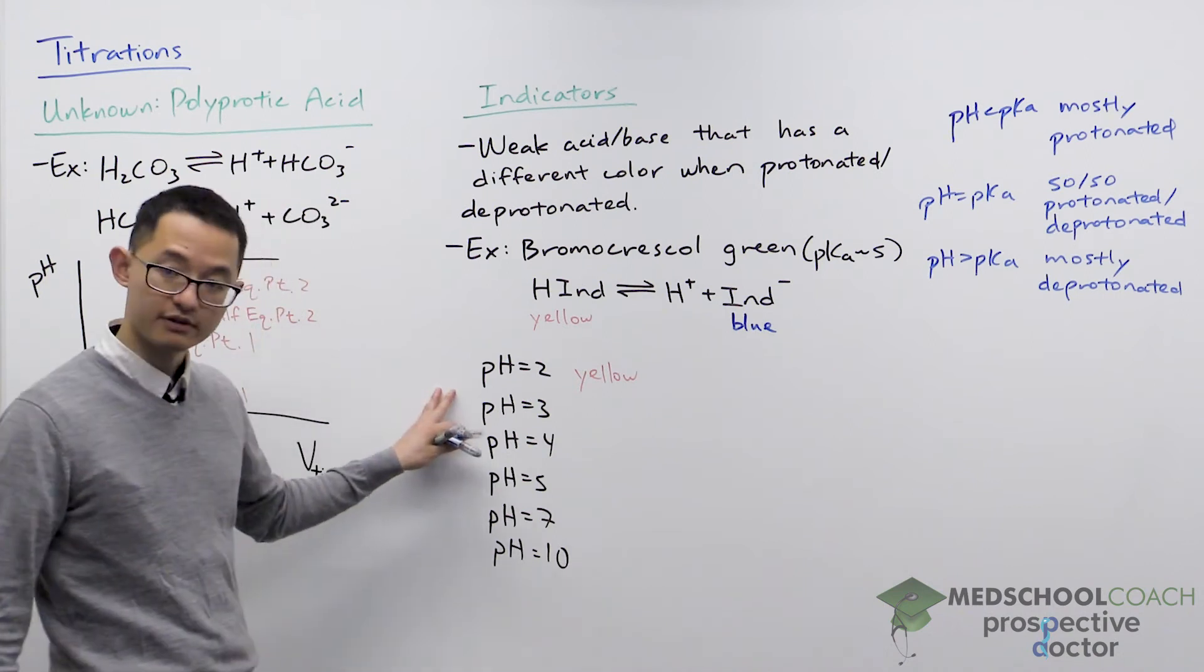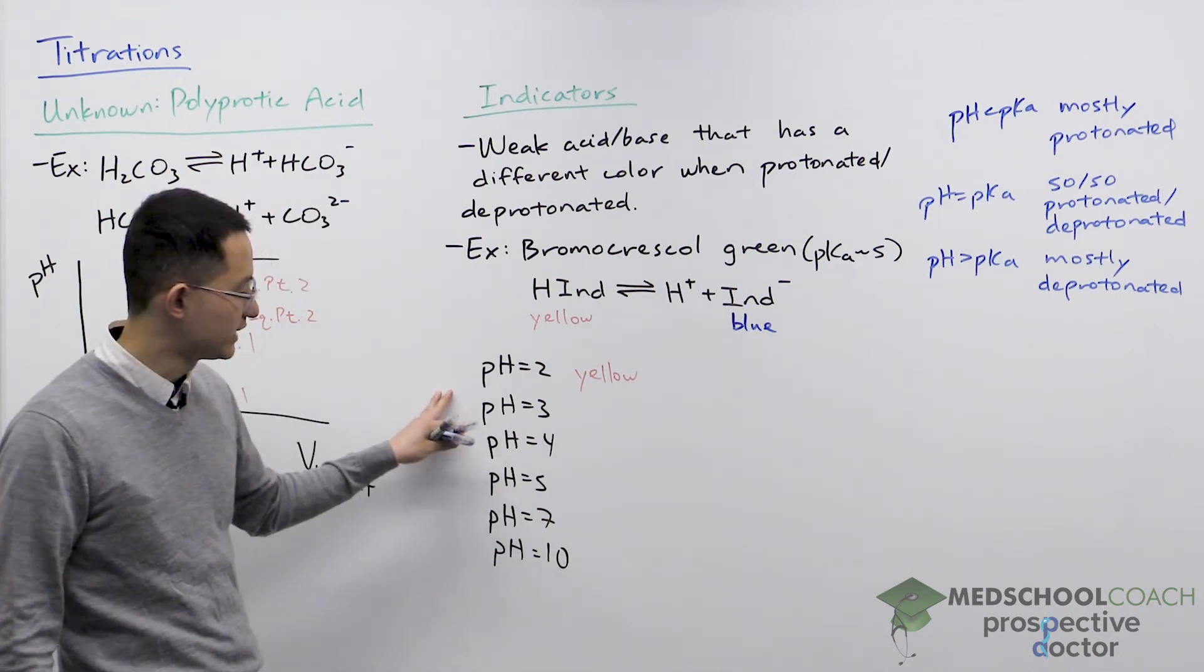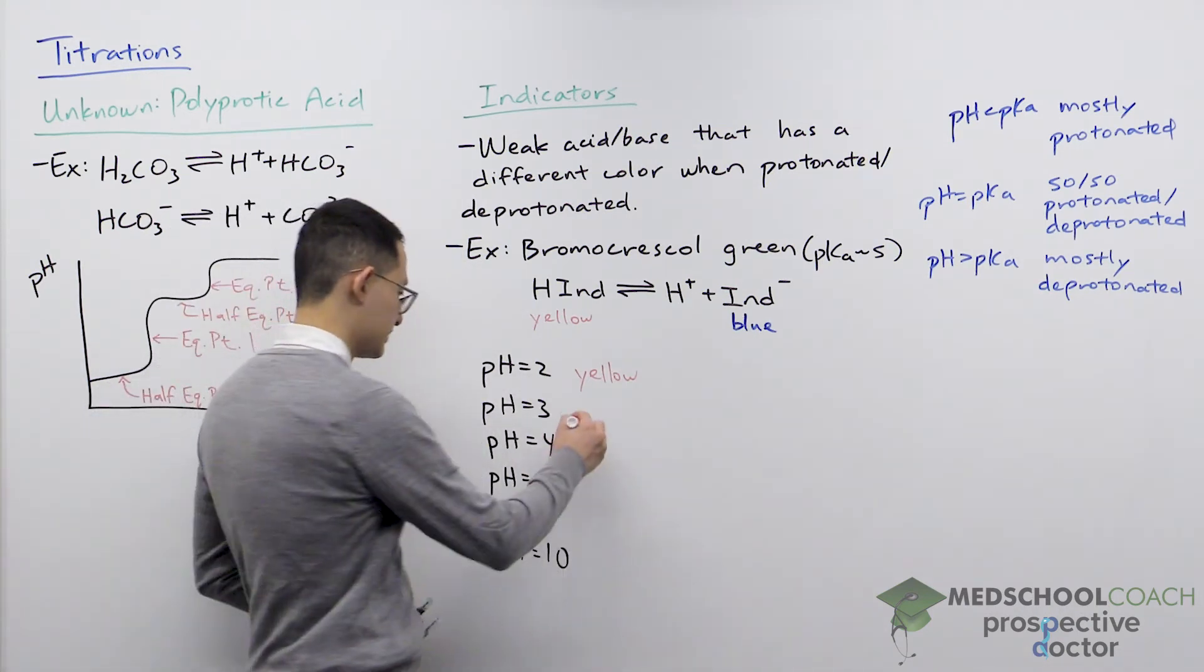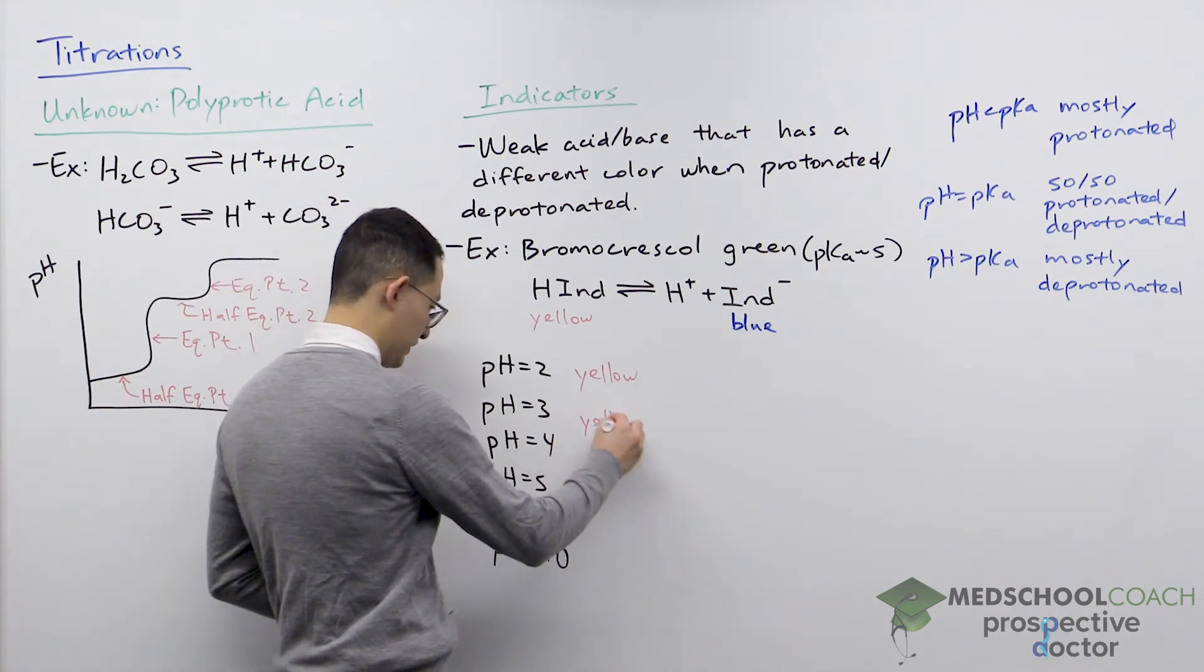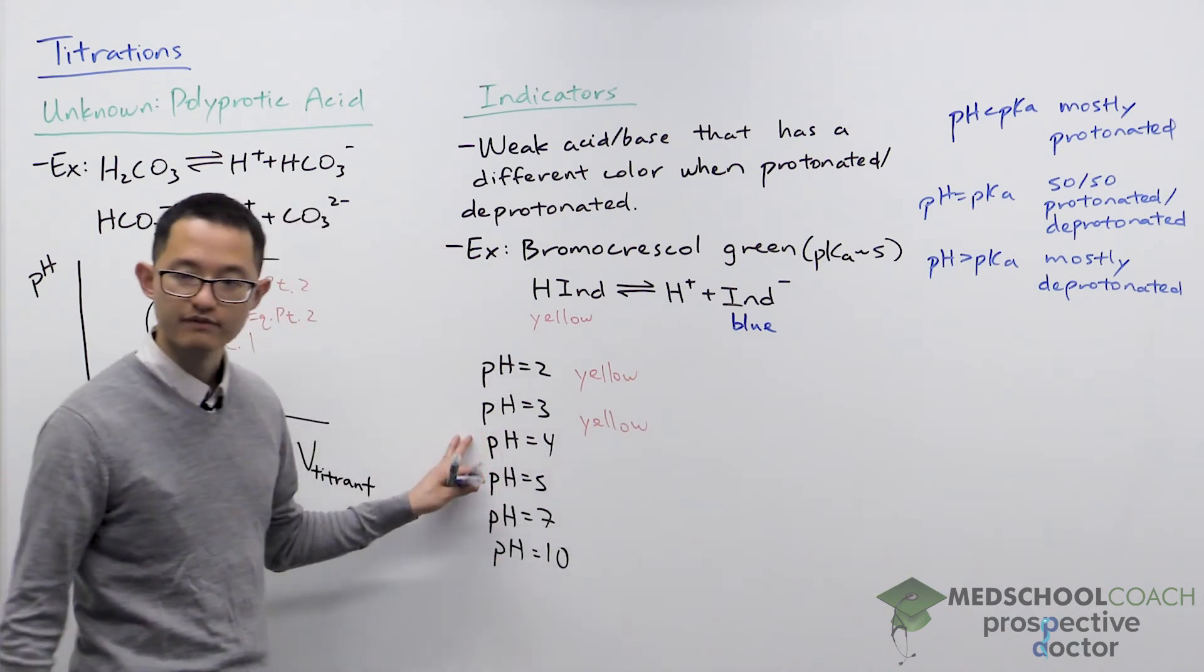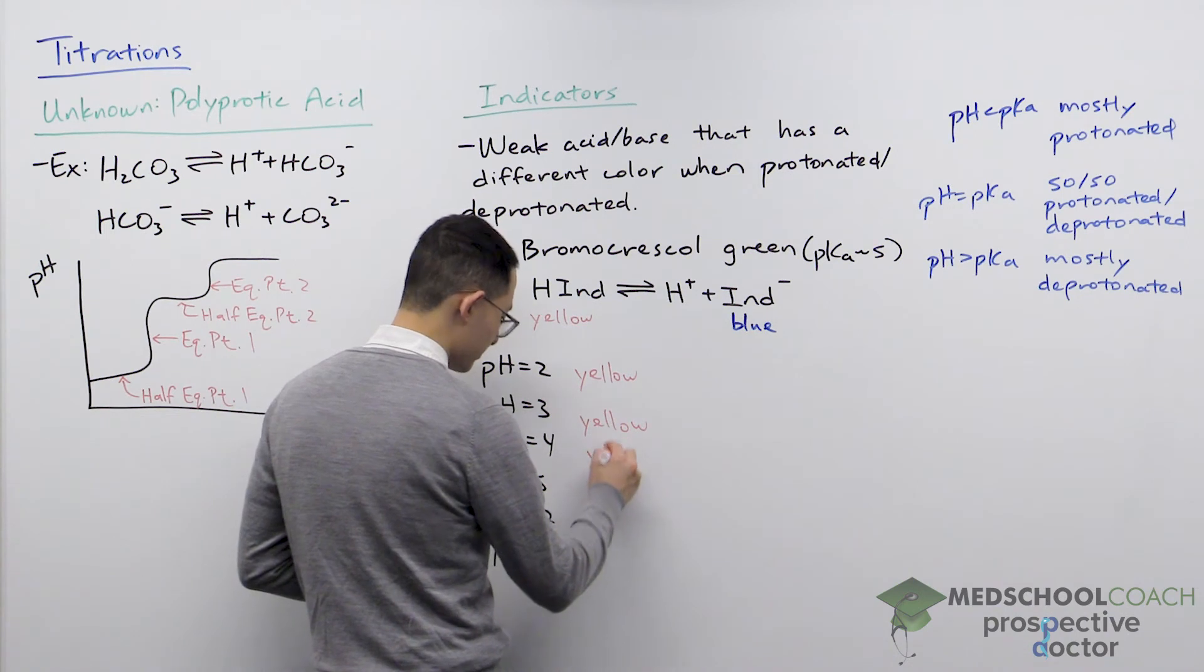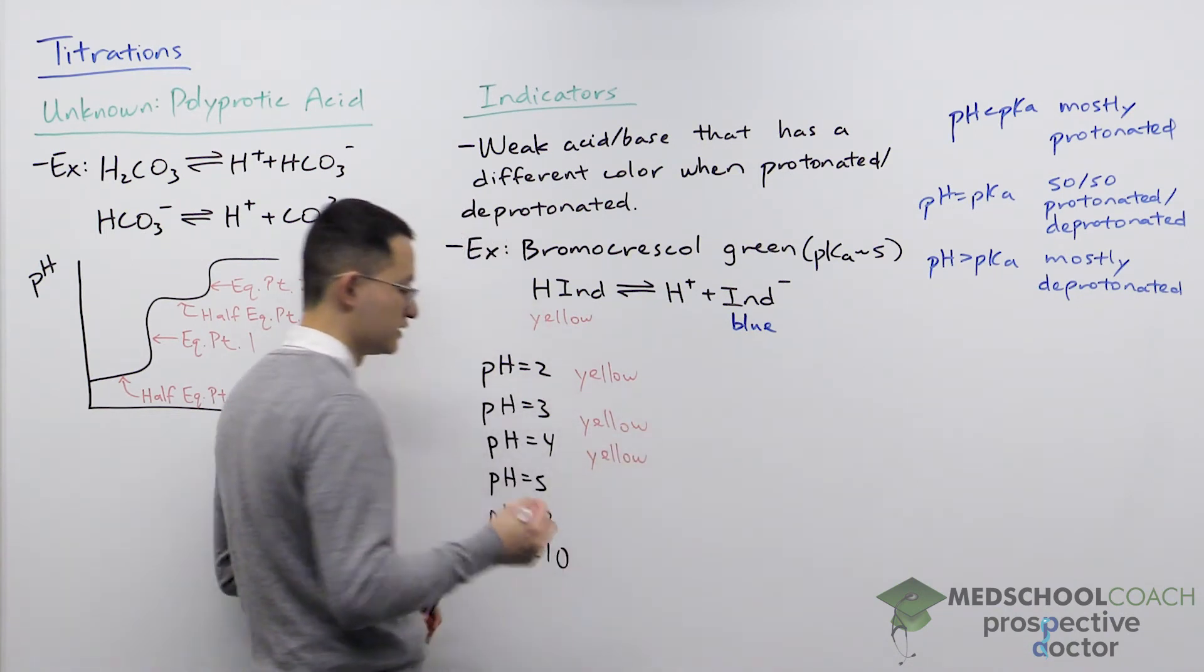How about at a pH of 3? Well, here at 3, the pH is still less than the pKa of 5, so your molecule is still mostly protonated, so still yellow. The same is also true at a pH of 4. The pH is still less than the pKa, so our molecule is still mostly protonated, so the solution is still yellow.